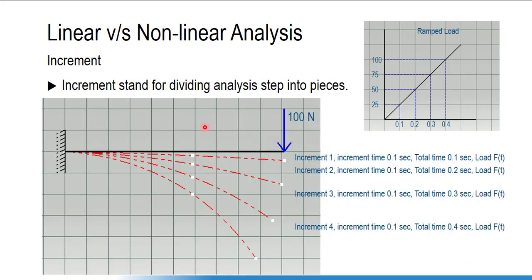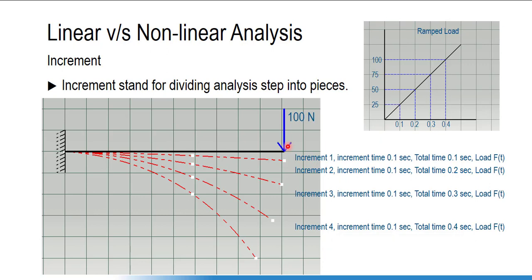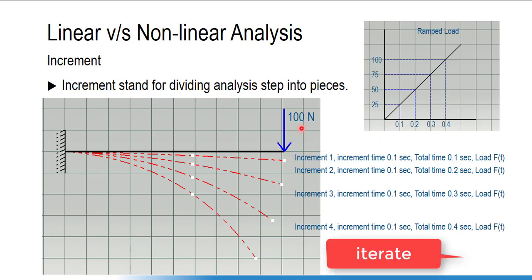Here is the graphical view of the beam problem with the constraint and one load applied. In the linear perturbation scheme, there is no increment or iteration — whatever load we apply, the software assumes it is applied instantaneously. But in the general static step, the analysis is divided into pieces — increments — and the software needs to converge the solution by iterating.